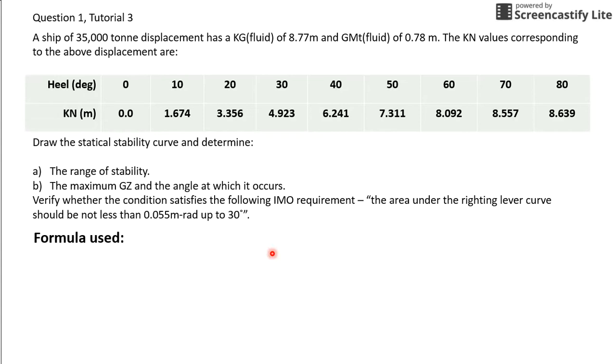So, first up, we're just going to go through some of the formulas that will be used in this tutorial. The first one will be GZ equals to KN minus KG fluid sine theta. And the second one will be Simpson multipliers. For 1331, you will use this formula and respectively.